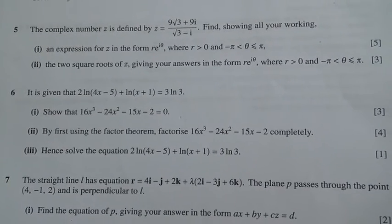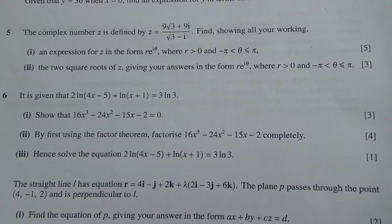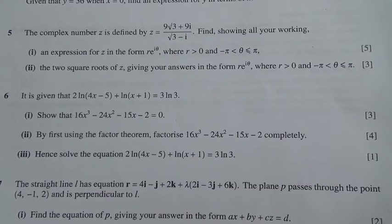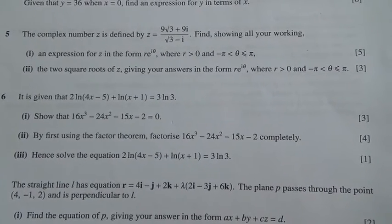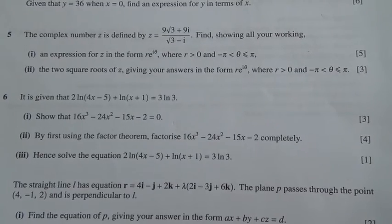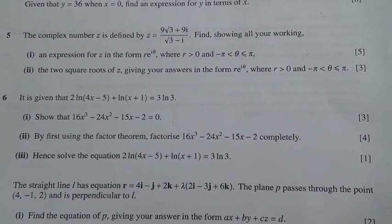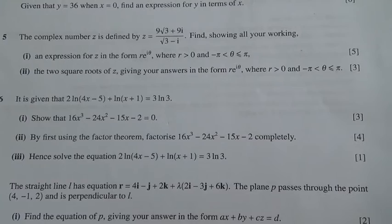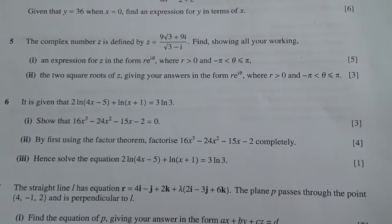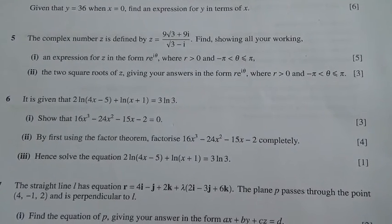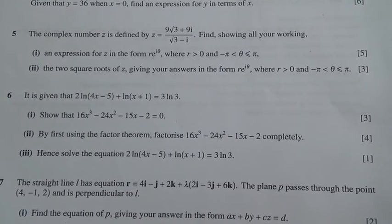Hi, this is question number 6 taken from June 2014, Advanced Level Maths P3, HSE. It is given that 2 ln(4x − 5) + ln(x + 1) = 3 ln 3. Show that 16x³ − 24x² − 15x − 2 = 0.